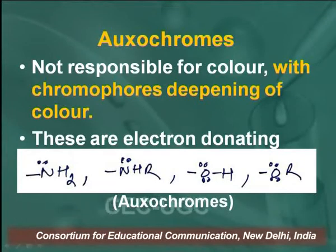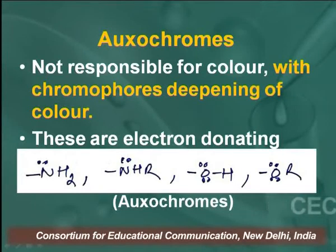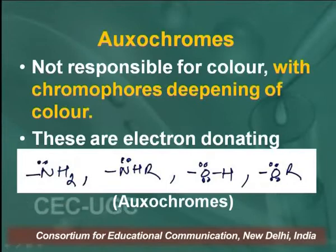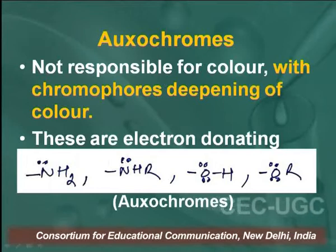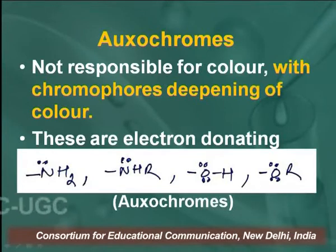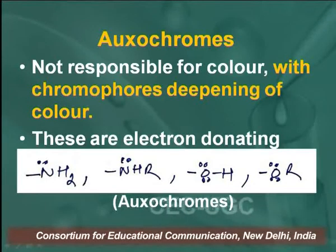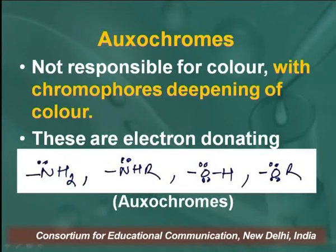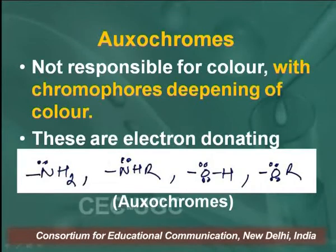In the presence of oxochromes, deepening of colours takes place. Oxochromes are electron-donating groups like NH₂, NHR, hydroxyl group, and alkoxy groups. Due to the presence of non-bonding electron pairs on the oxochromes, they can extend their conjugation to the chromophores.